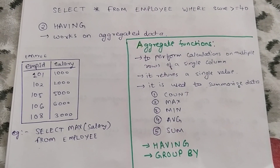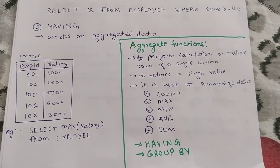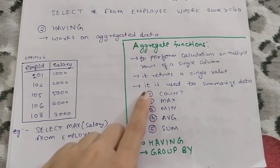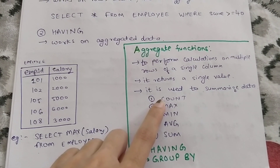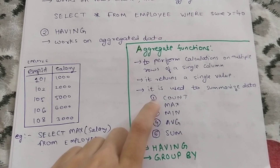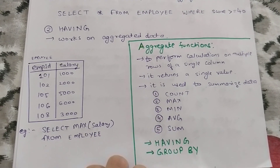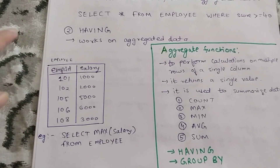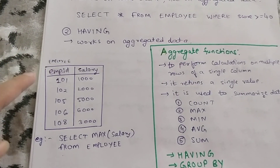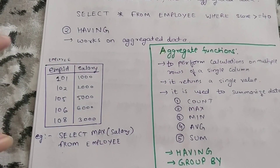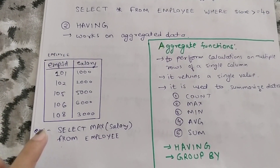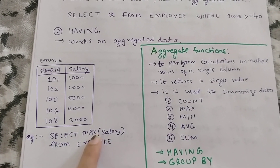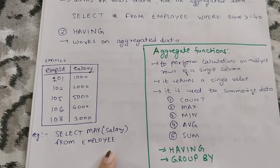We'll understand it with an example. There are basically five very common aggregate functions: COUNT, MAX, MIN, AVERAGE, and SUM. Here is an example — a basic table with employee ID and their salaries.